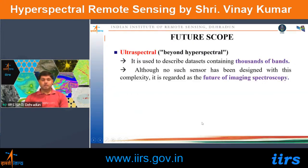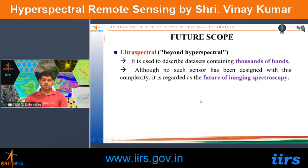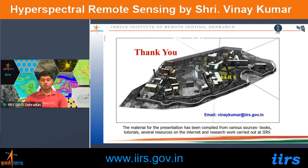The future scope is ultra-spectral imaging — beyond hyperspectral — which would contain thousands of bands ranging from visible and reflected infrared to thermal infrared. No such imaging sensors currently exist, and this is considered the future of hyperspectral remote sensing. Thank you.